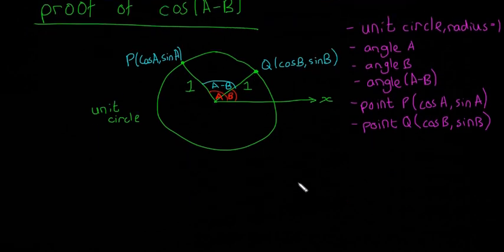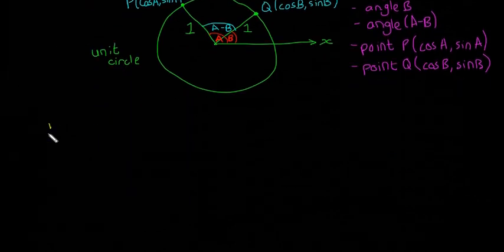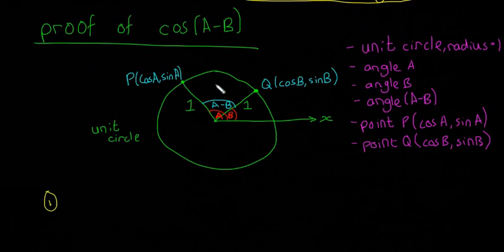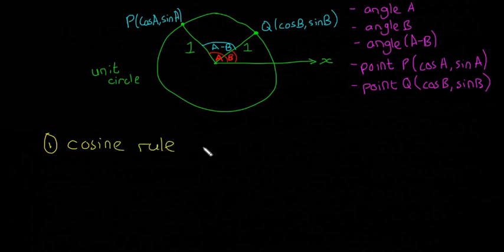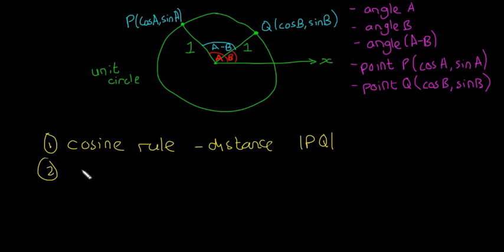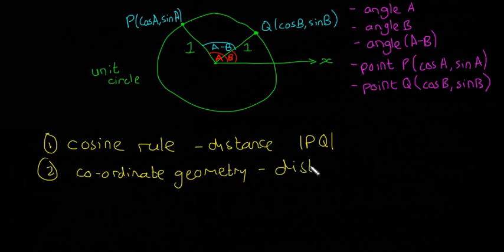There are two things you have to do in this proof. First, you need to get the distance between P and Q using the cosine rule. Second, you need to find the distance PQ using coordinate geometry. Once you do both of those, the proof is practically done.